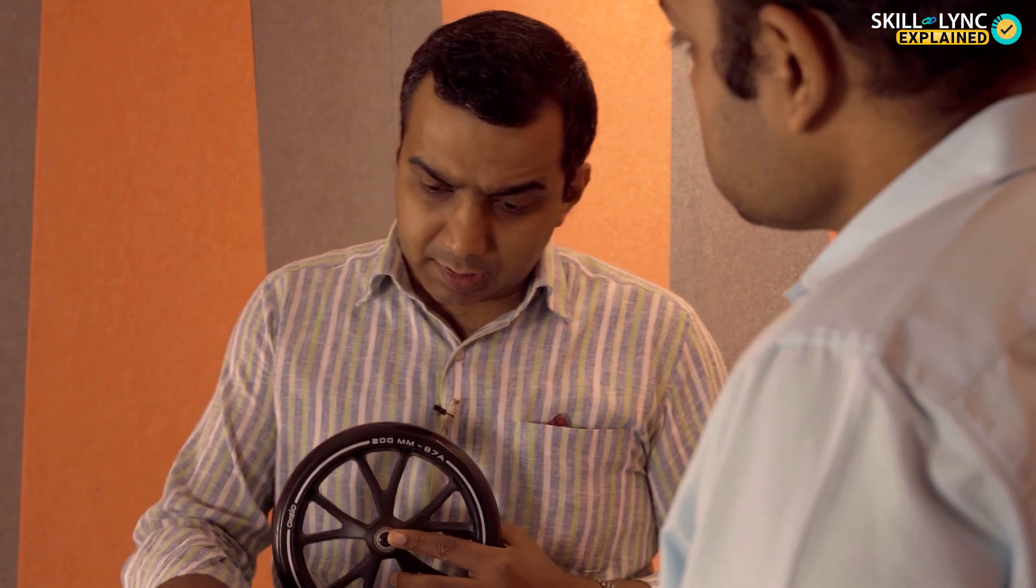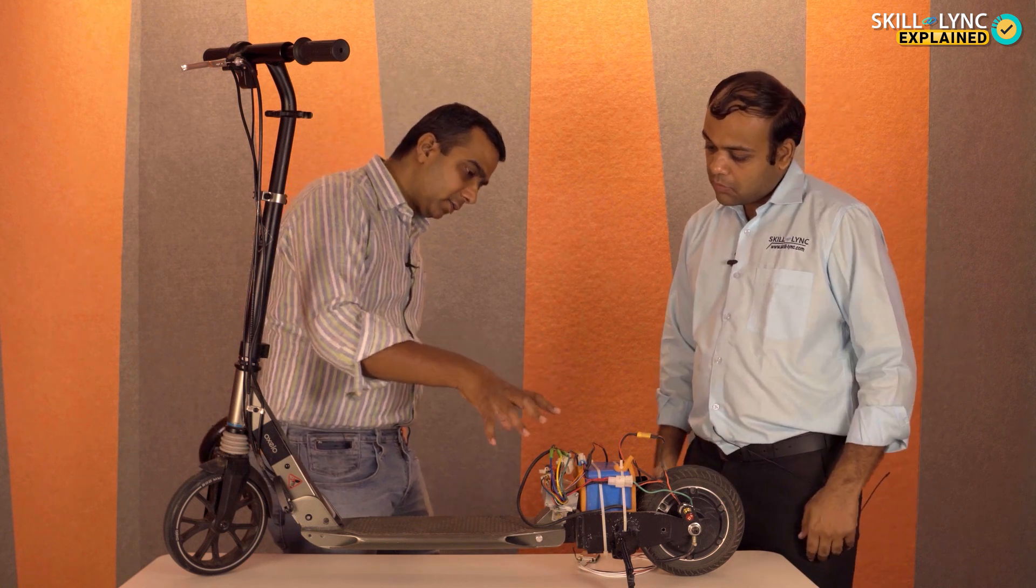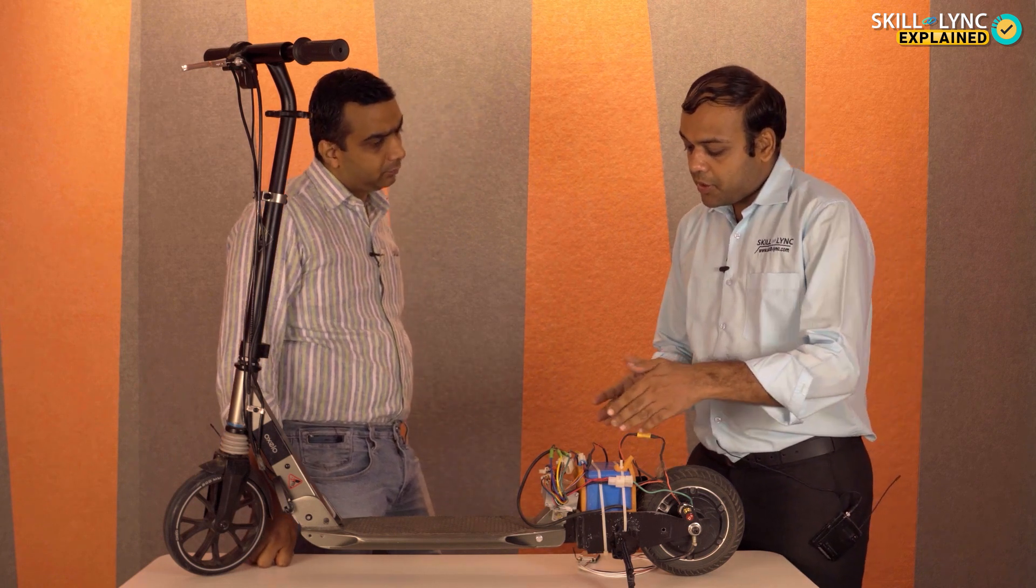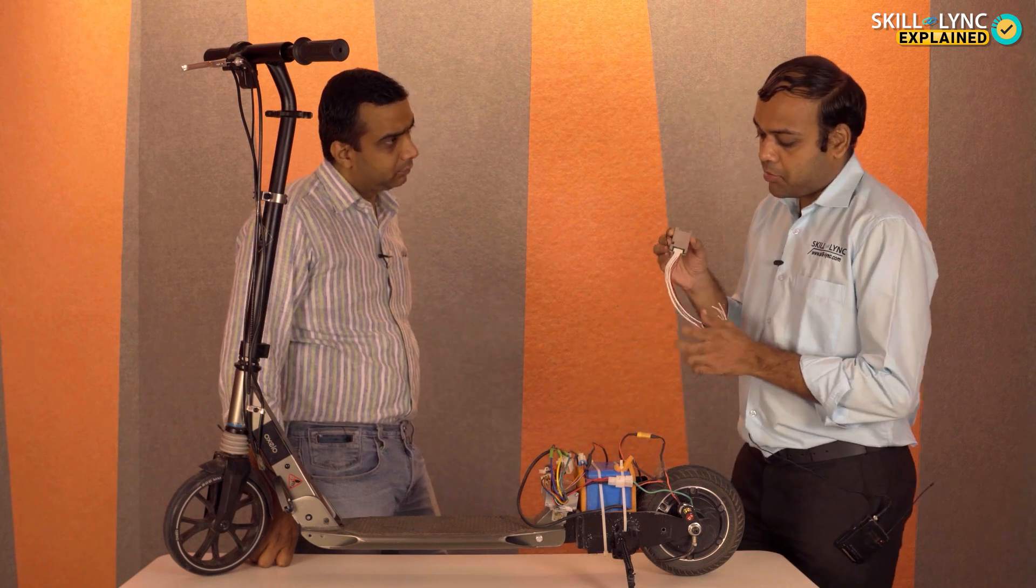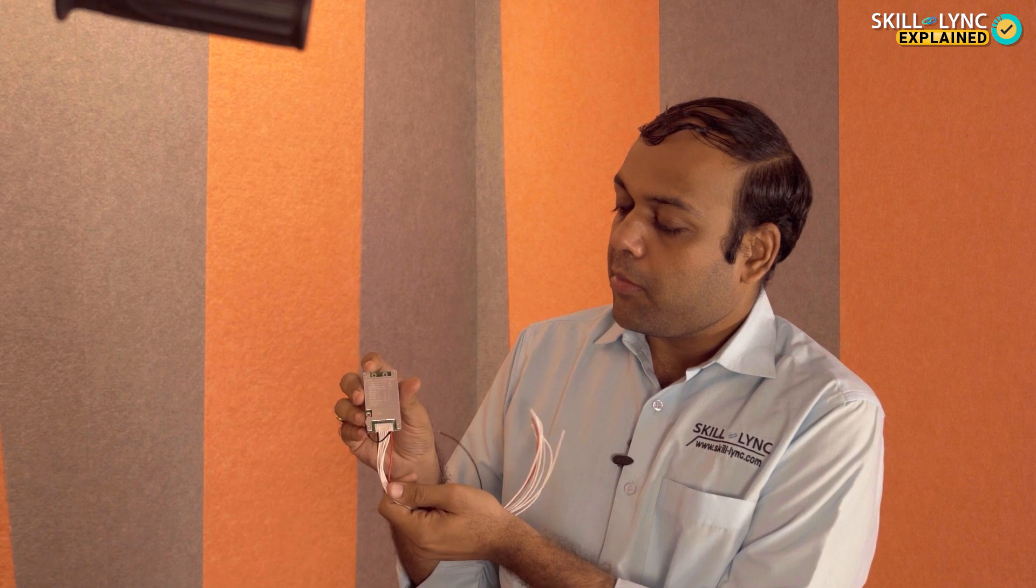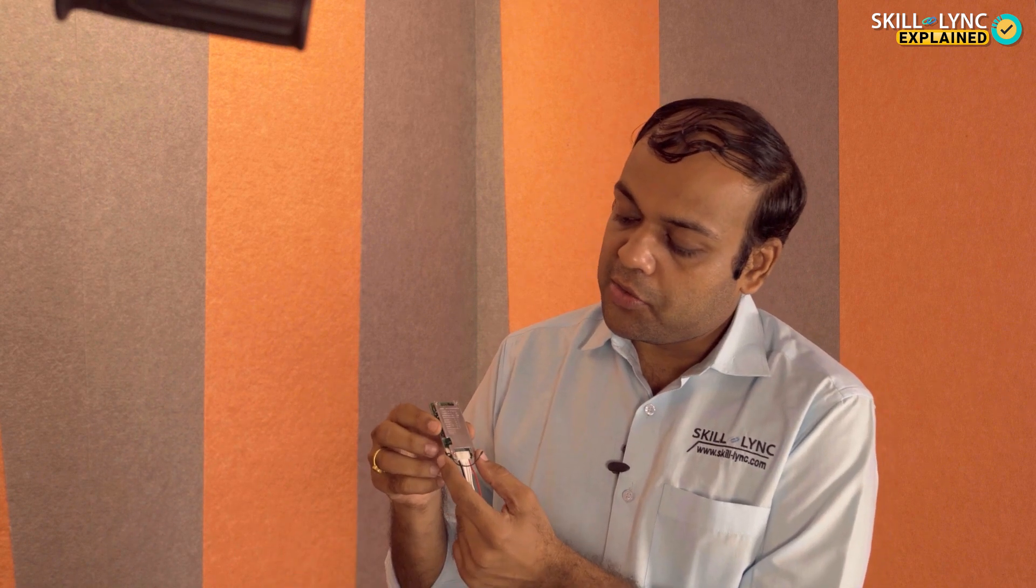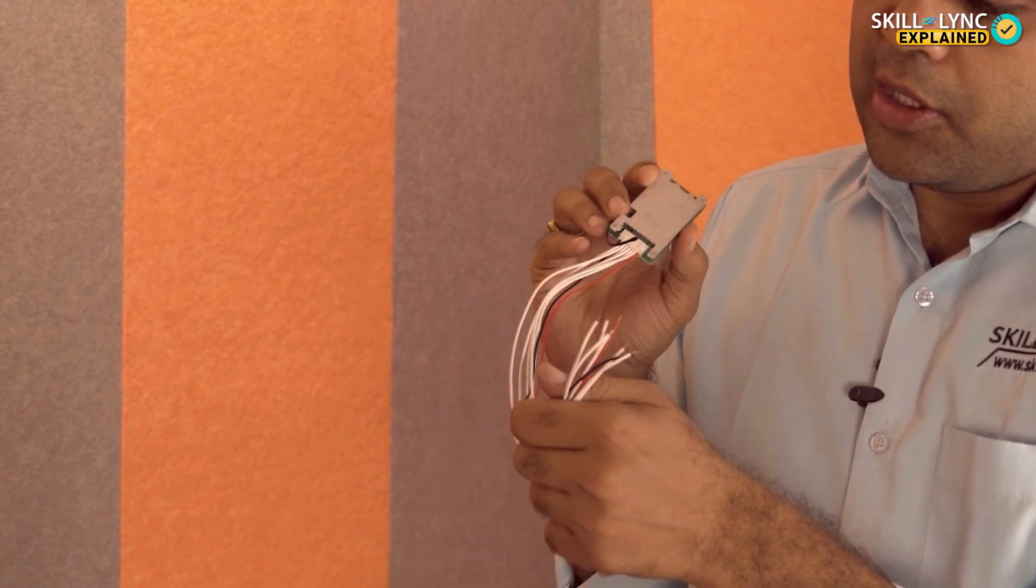So where does the BMS, this battery management system come into place in all this because I'm not able to see it anywhere here. Well, you will not be able to see this because it's inside the battery pack. But I have got a similar battery management system module with me. This is kind of a small module. And there is a battery management system IC, which will be taking care of how much is the current flowing through, or whether it's charging or discharging. And it is going to keep the battery pack protected.